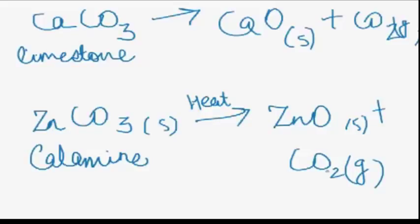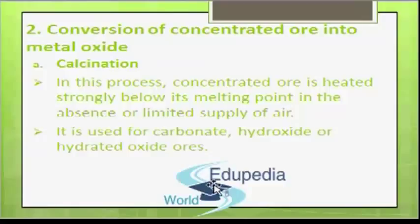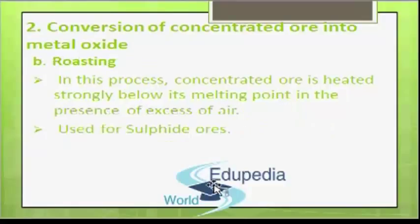The second process is roasting. The sulphide ores are subjected to roasting. Roasting is a process in which the concentrated ore is heated strongly below its melting point in the presence of excess air. Roasting is used for sulphide ores.